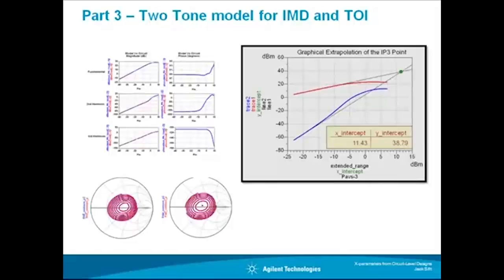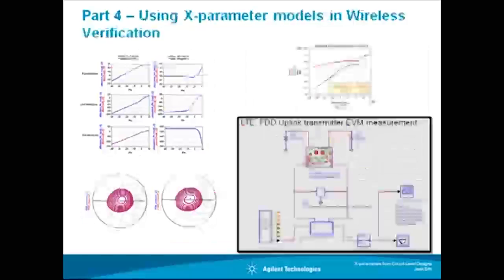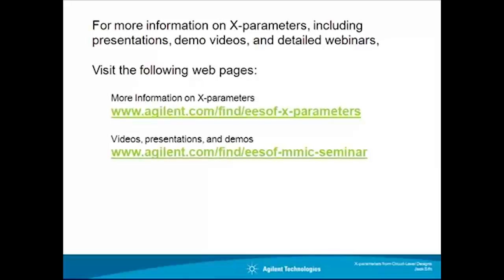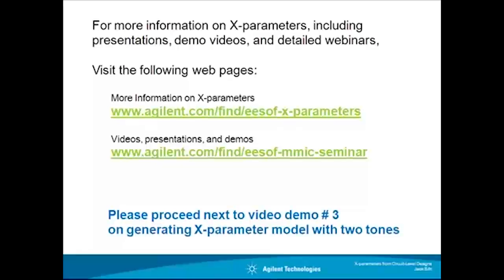In the next video, part 3, I will show you how to generate a two-tone model that can be used to determine the intermodulation distortion products and third-order intercept. And in part 4, I will show how the X parameter model is used in wireless verification with much faster simulation and verification speed. Thank you for watching this video. For more information on X parameters, please visit us at the following two web pages. Please proceed next to video demo number 3 on generating X parameter models with two tones. Thank you.